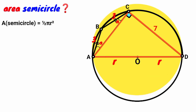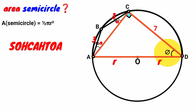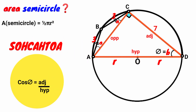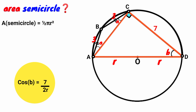Now look at triangle ACD. Because of this right angle, it is a right-angle triangle. We use SOH-CAH-TOA on it. Taking this angle as theta, assume it is B. This side is the opposite and this is the adjacent. Using CAH: cos θ = adjacent over hypotenuse. Theta is B, the adjacent is 7, and the hypotenuse is R + R = 2R. So cos B = 7 over 2R. Keep this equation aside.